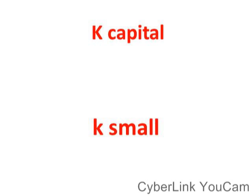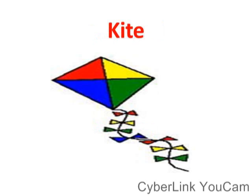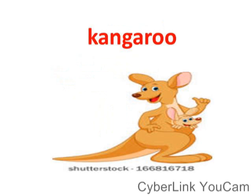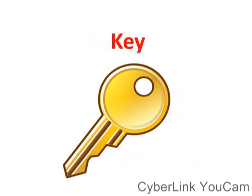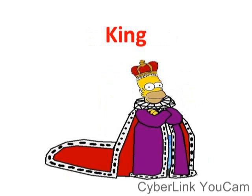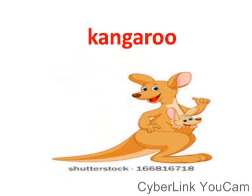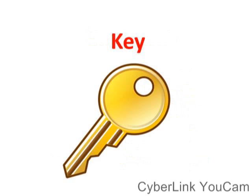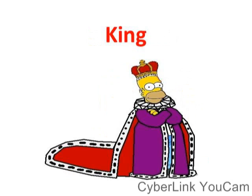Words that start with letter K: kite, kangaroo, key, king. Again — kite, kangaroo, key, king. So what is the sound of letter K? The sound of letter K is /k/.